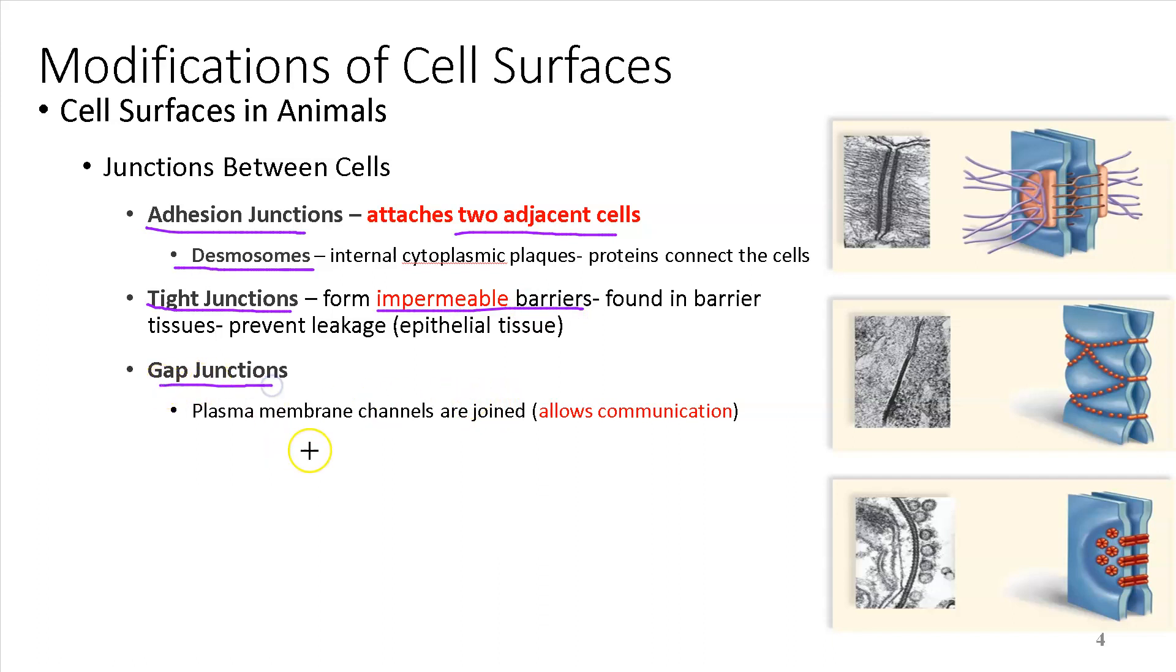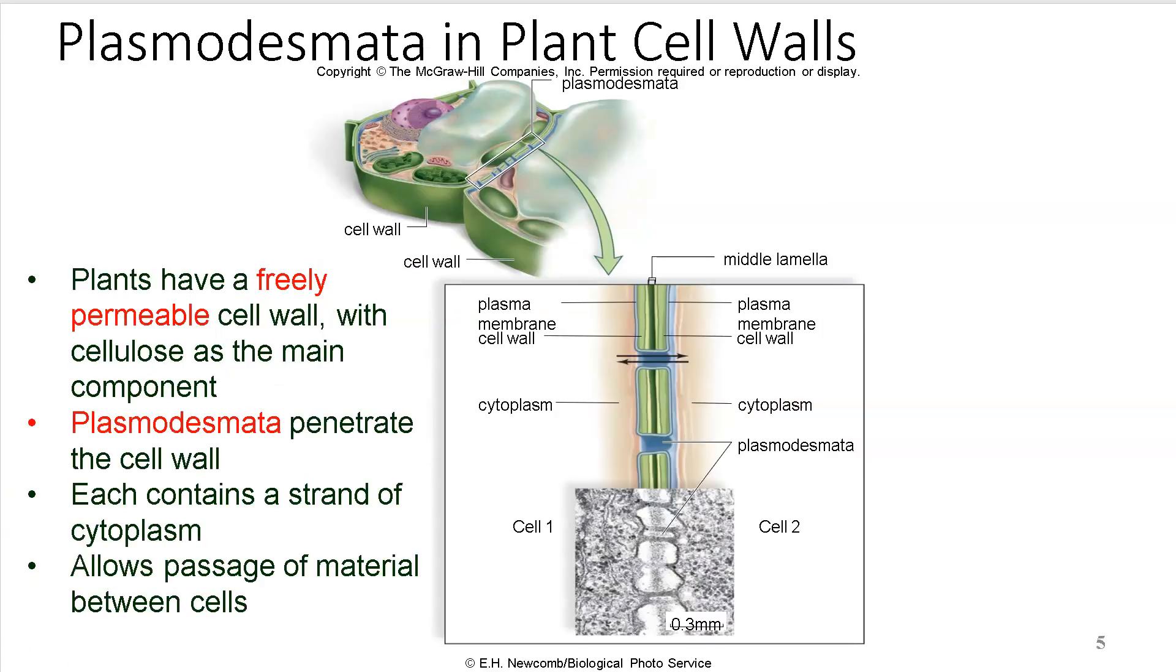And then gap junctions, which of course, by the name, you can tell these are channels. So these allow communications. And the communications as that happens, as far as signaling goes, signaling as far as molecules. And that's how many things communicate through signals. So the next slide is about plasmodesmata in plant cells. So if you look on the anatomy here, you can see plasma membrane cell wall. And then you have the cell wall there and then cytoplasm, but plasmodesmata, this is underneath a transmission electron microscope, they have freely permeable cell walls.